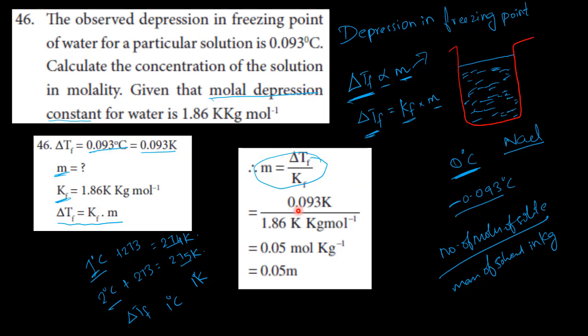So 0.093 Kelvin divided by 1.86 Kelvin kg per mole. Kelvin, Kelvin cancel. So moles per kg. 0.05 moles per kg. Moles per kg is the molality.